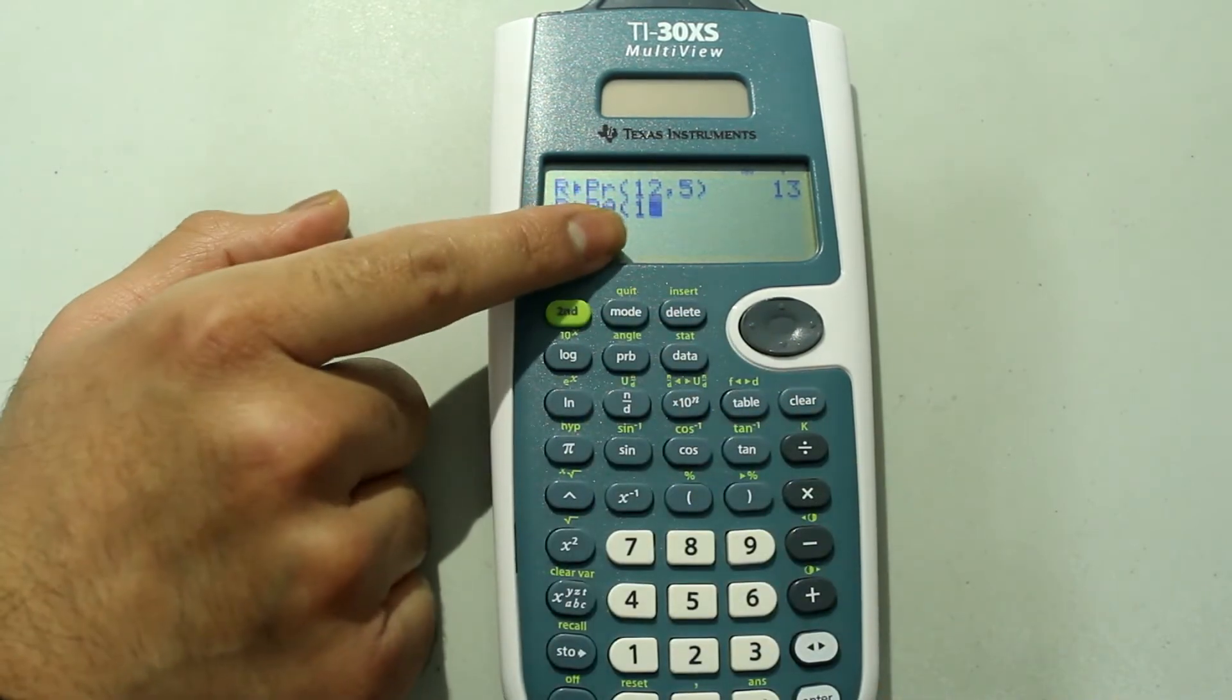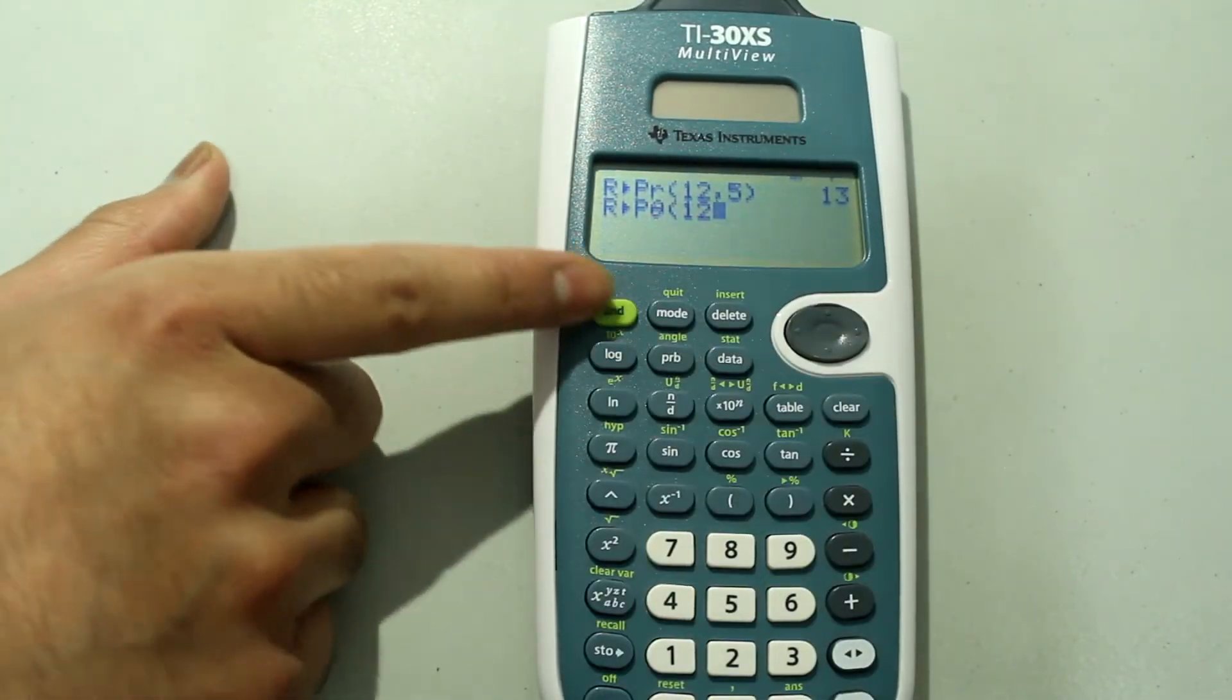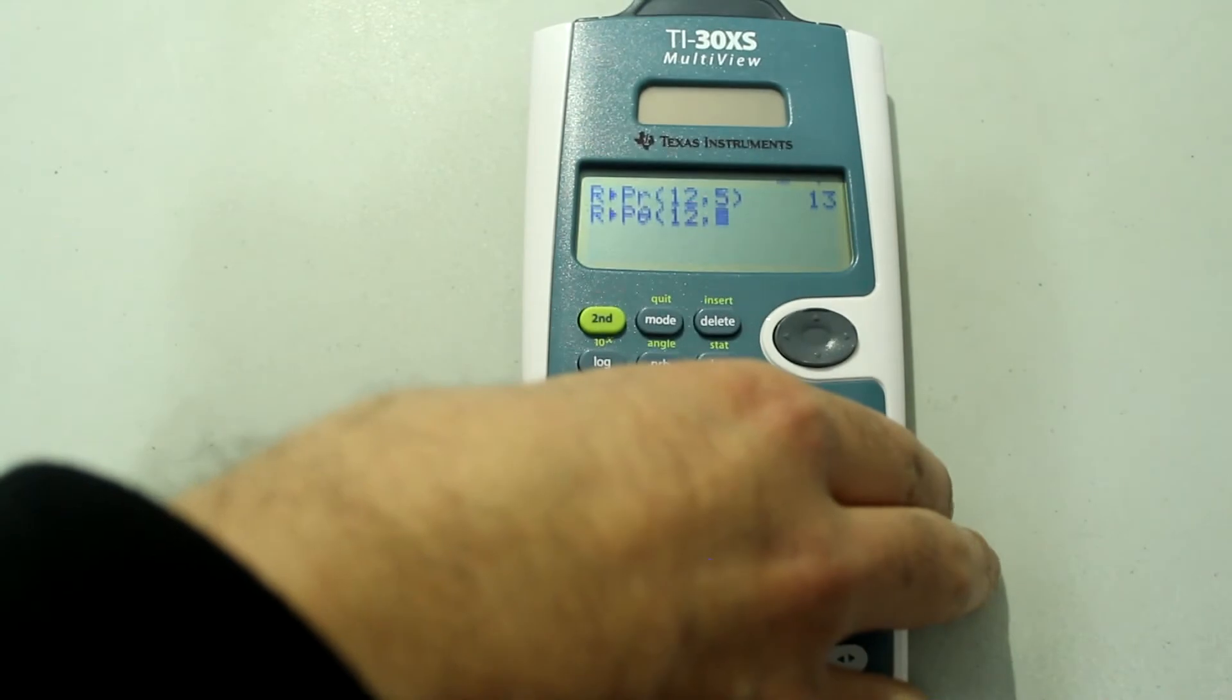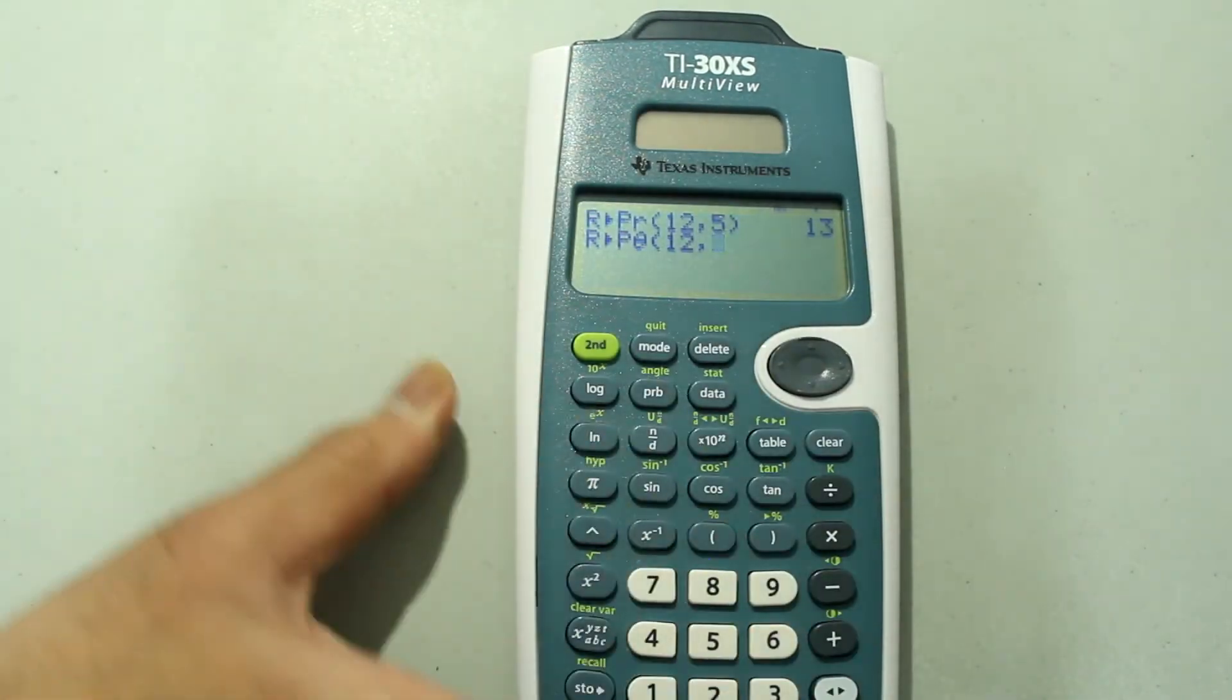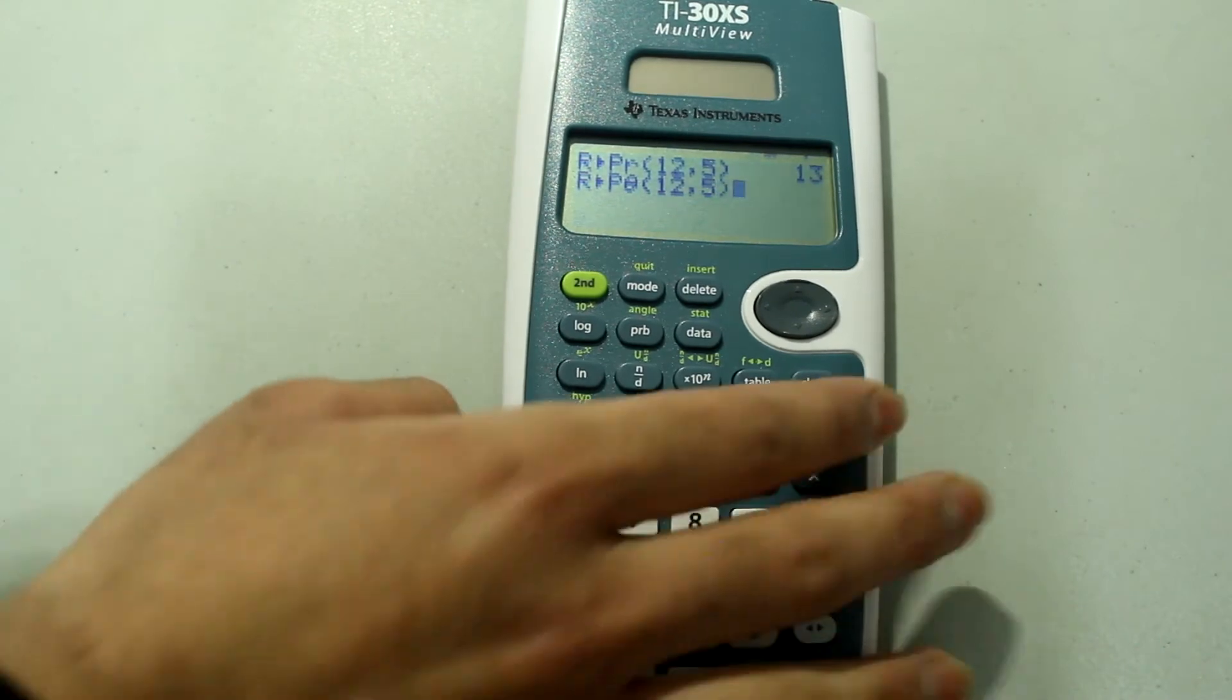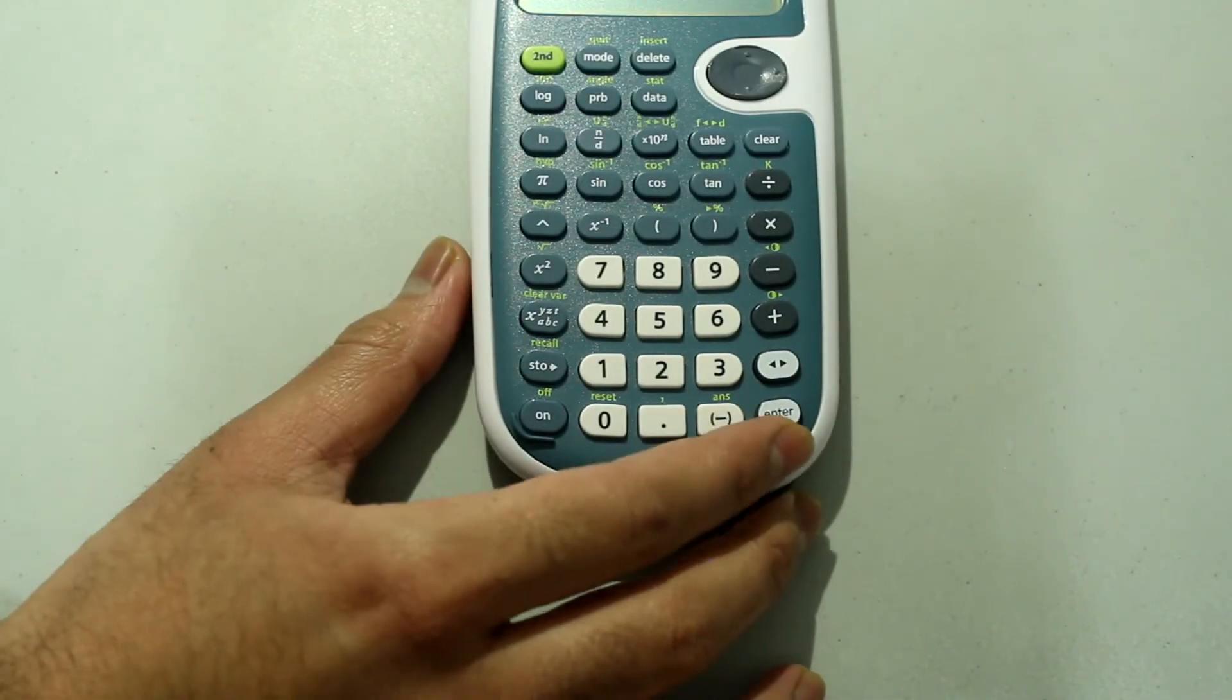So still we're just going to type in 12, and then second the decimal button. So this is what it looks like so far. And then just 5 on the number pad, close off the parentheses. This is what my input looks like, and all I need to do is press the ENTER key.